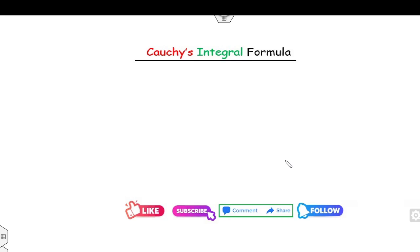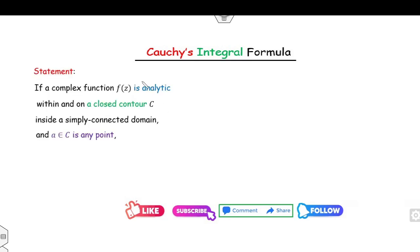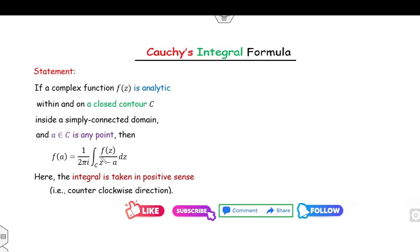What is the statement of the Cauchy integral formula? If f(z) is a complex function which is analytic within and on the simple connected domain C, and 'a' is any point inside it, then the integral of f(z)/(z−a) over C equals 2πi·f(a). Remember: f is analytic, while f(z)/(z−a) is not analytic at z = a.